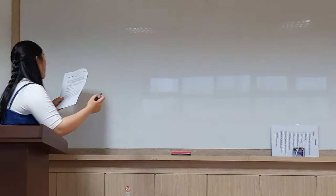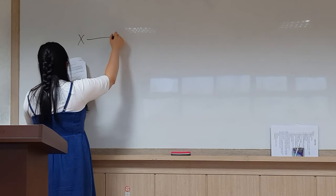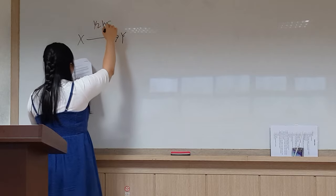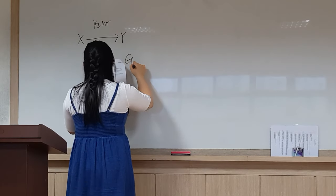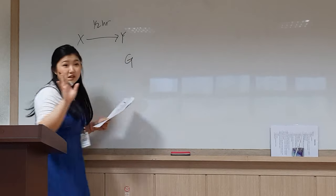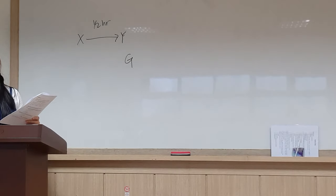So for instance, this one: Scott starts jogging from point X to point Y. Half an hour later, his friend Garrett, who jogs one mile per hour slower than twice Scott's rate. I will stop there, because that's already very confusing.